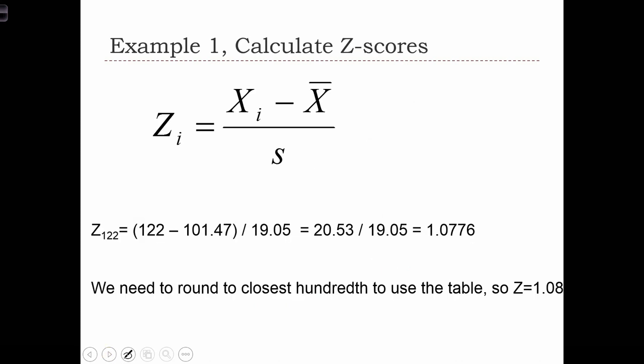So let's calculate the z-score. We have z equals xi, the x value, that's the amount of rain, is 122. We're going to subtract from that the mean precipitation and divide by the standard deviation. All of those numbers were given in the question. When we finish this, we find that our z-score is 1.0, and we'll round to the closest hundredth, 1.08.